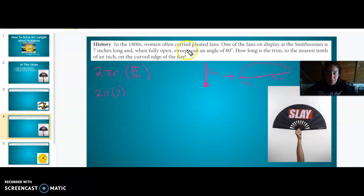So 2π times 7. When fully open, it sweeps at an angle of 80 degrees. There's our θ. So all this times 80 over 360. How long is the trim? The trim is this piece here. See how this is an arc? They're asking what's the length of this arc formed by this fan. So we plugged everything, we plugged our θ and we plugged our radius, and all we need to do now is compute.